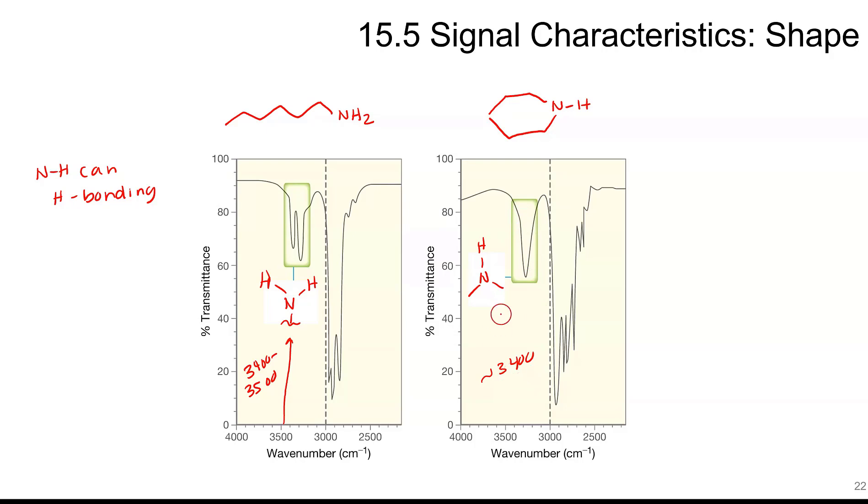Notice this is not as broad as the OH, so that would be the difference between those two. There would be no signal for a tertiary amine. So if we had N with three CH3s, there would be no signal because there is no NHs.